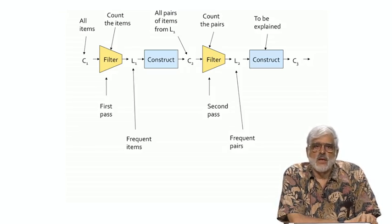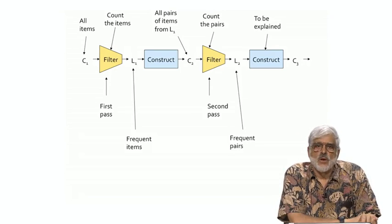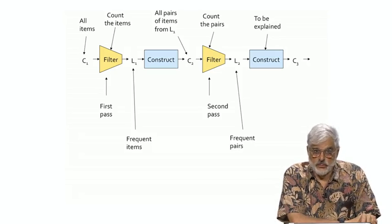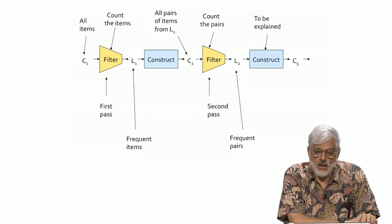We can proceed like this from the frequent pairs. We construct C3, the candidate triples, by a technique we'll describe on the next slide. Then we filter C3, to get L3, from that we construct C4, and so on.